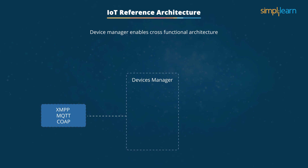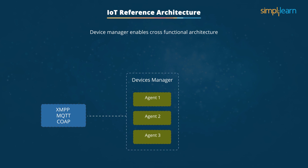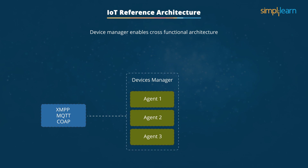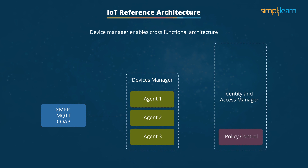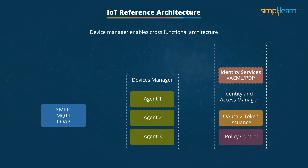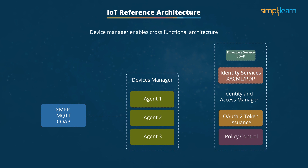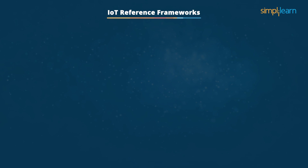Cross-functional architecture is possible using a device manager that provides a single platform for remote management. The device manager communicates with devices through set protocols. Device management uses device management agents and is responsible for remote management of software. The identity layer has cybersecurity capabilities including policy control and OAuth 2 token instruments. Other capabilities include identity services, XACML, PDP, and directory of users, e.g., LDAP.